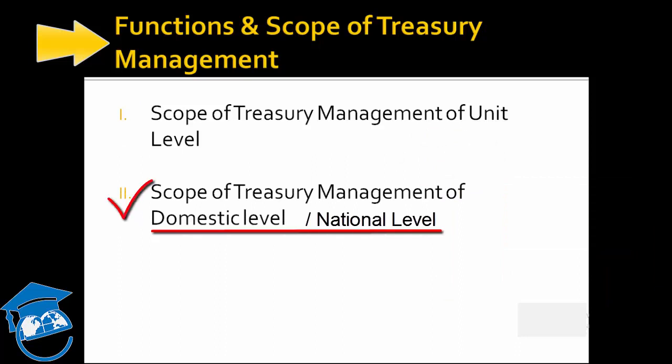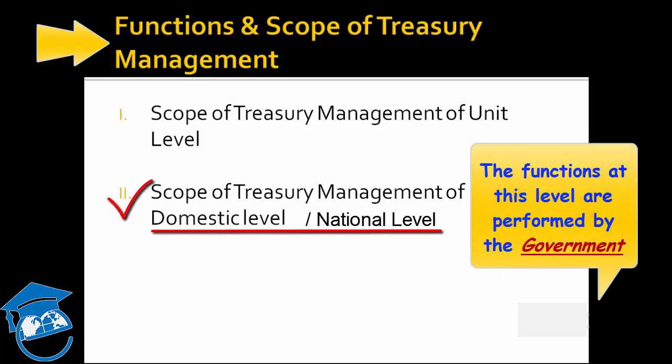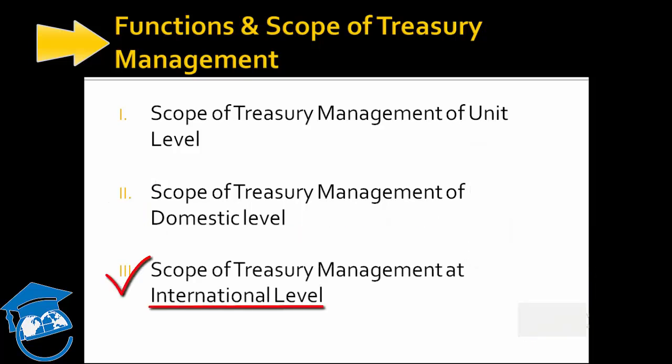At the domestic level, this function is performed by the government by maintaining the circulation of money in the economy. At the national level, the scope of the treasury manager is to channelize the savings of the community into profitable investment avenues — this role is performed by commercial banks, which channelize savings from households to investment avenues and earn profit through their operations.